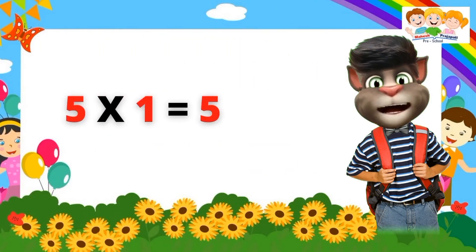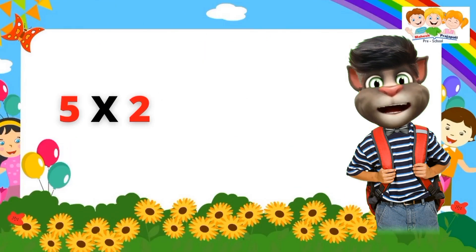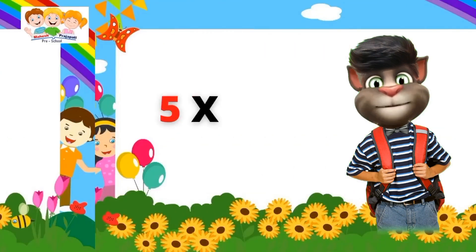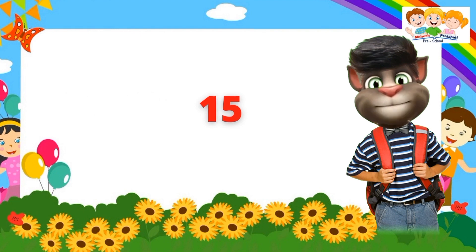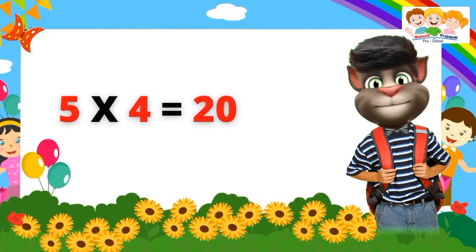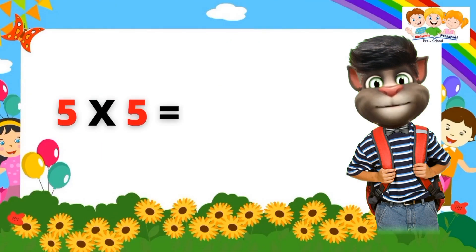Table of Five. Five ones are five. Five twos are ten. Five twos are ten. Five threes are fifteen. Five threes are fifteen. Five fours are twenty. Five fours are twenty. Five fives are twenty-five. Five fives are twenty-five. Five sixes are thirty.